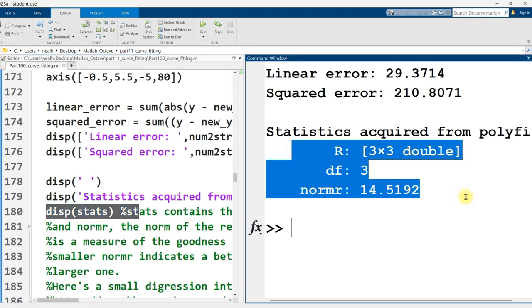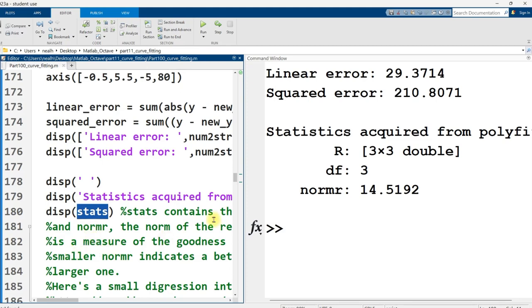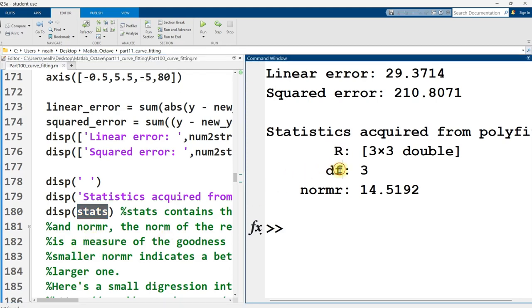I displayed out stats and it displays out like this. It's a little bit weird. Stats is actually what is known as a structure. If you've programmed in a C programming language, you probably know what a structure is. But if you haven't, just think of it as a bag of variables, a bag of other variables. So stats is a variable. And within it, this one has R, DF, and norm R as further variables. DF is definitely degrees of freedom. R is a three by three matrix. I assume, I actually don't know what that is. And then this is the norm of the residuals, which is another measurement of error.